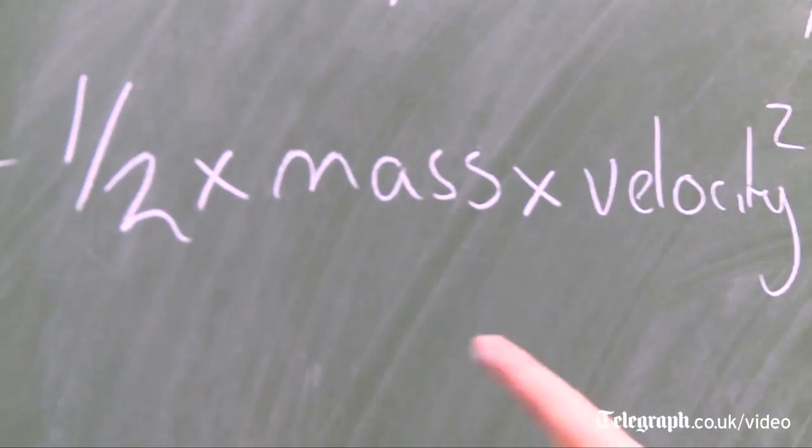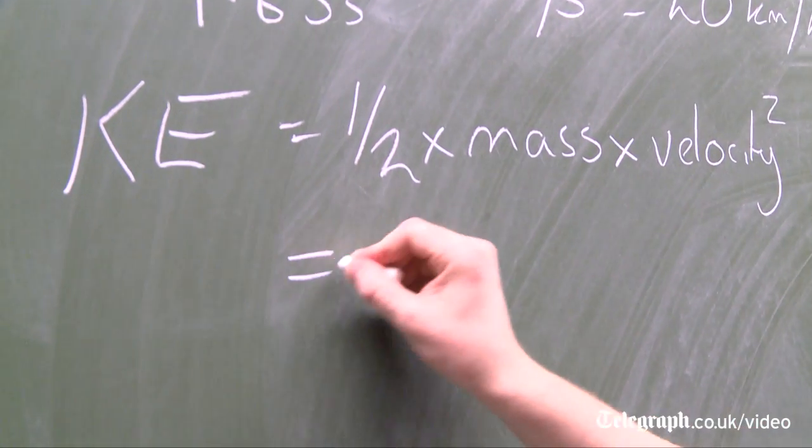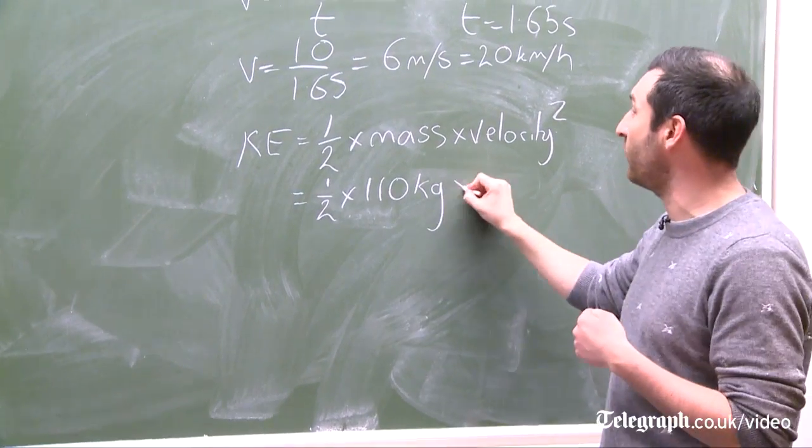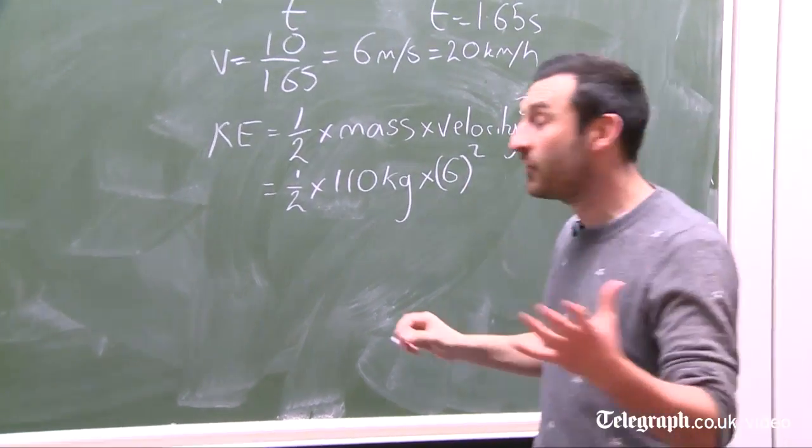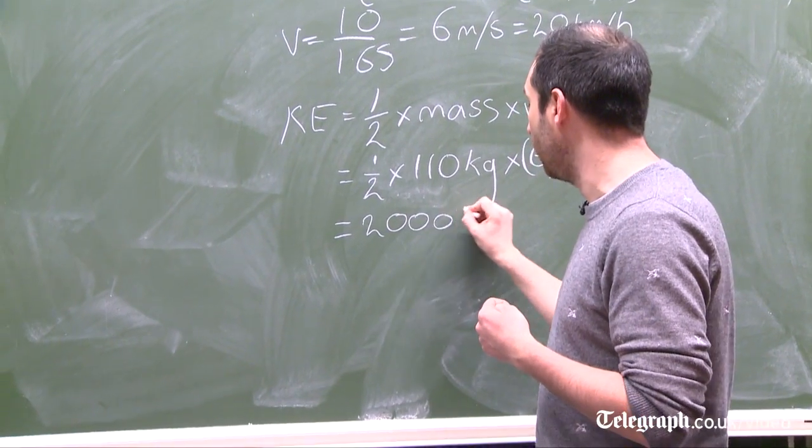We know the mass of Chris is 110 kilograms. So we put that in and we've just calculated his velocity in metres per second. So we do 6 squared and that comes out to roughly 2,000 joules.